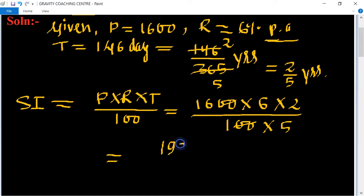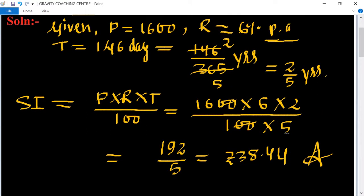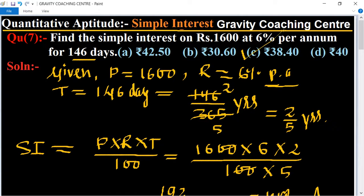Now divided by 5, so the result is 38.44 rupees, which is the required answer. So 38.40, option C is the right answer.